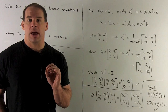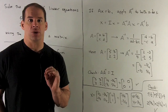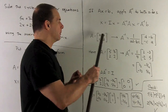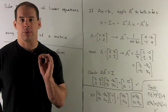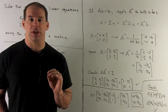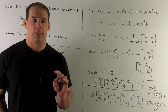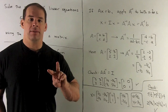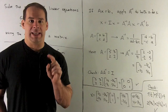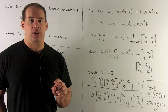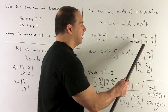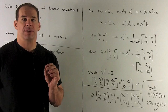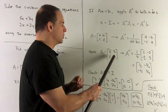Next step: how do we get the inverse of a 2 by 2 matrix? If we have the matrix with entries a, b, c, d, the formula for its inverse is A inverse equals 1 over the determinant — that's ad minus bc — and then we flip the items on the diagonal and negate the off-diagonal entries, giving d and a on the diagonal, and minus b, minus c off-diagonal.